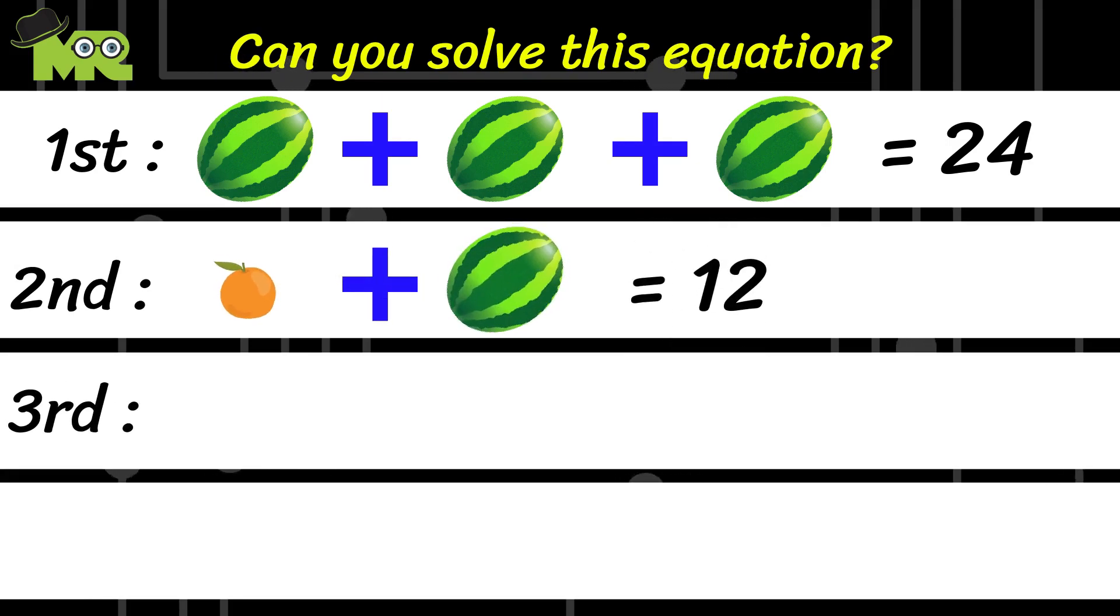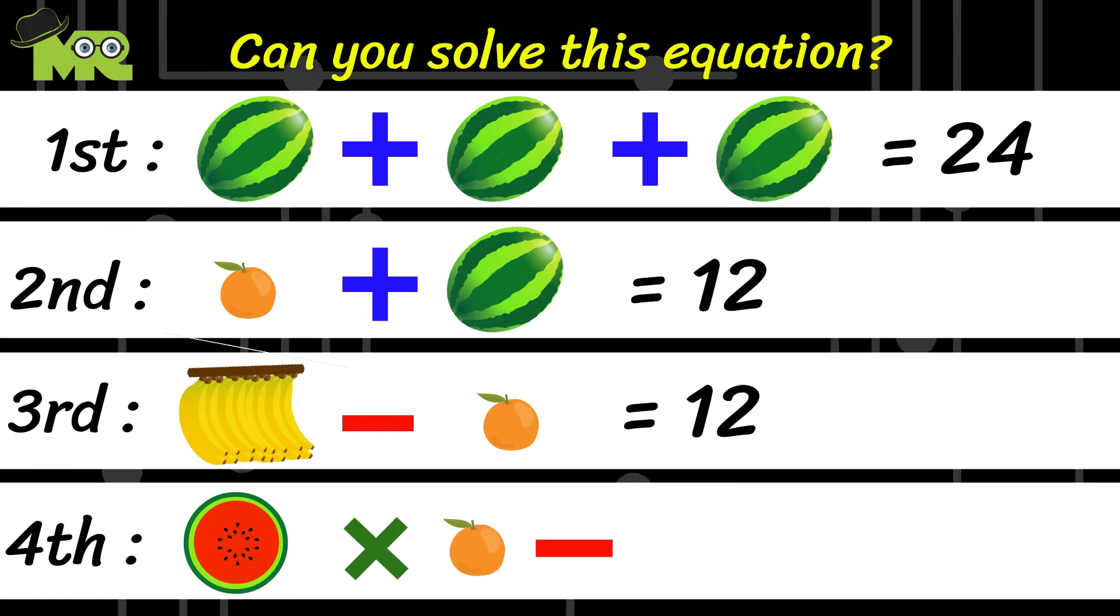The third equation is, if this bunch of bananas minus an orange is equal to 12, what would your answer for the fourth equation be? Half a watermelon multiplied by an orange minus this bunch of bananas.